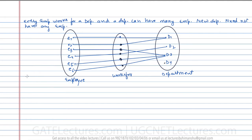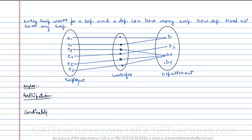Now there are three things which you need to find: number one, what is the degree of this relation; second, what is the participation constraint; and third, what is the cardinality ratio.